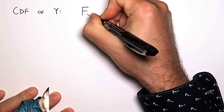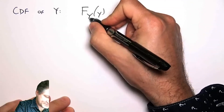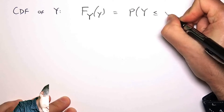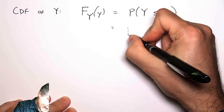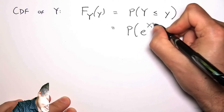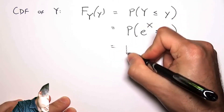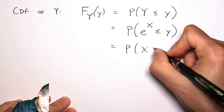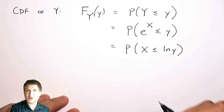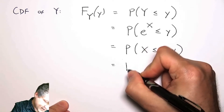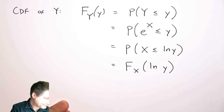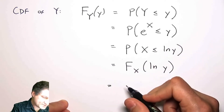The CDF of Y is the probability that capital Y is less than some number. Now I work out what I know about Y — Y was defined as e^X, so I take the log of both sides, giving X < ln(y). This is now an expression in the form of the CDF of X evaluated at the point ln(y).